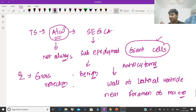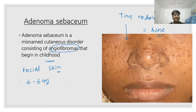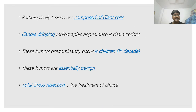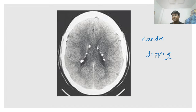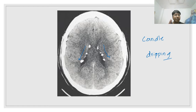The imaging finding for SEGCA is called 'candle dripping appearance' — you can see the appearance of a candle dripping down. The most common site of SEGCA is the wall of the lateral ventricle near the foramen of Monro. This concludes the discussion of tuberous sclerosis and Von Hippel-Lindau syndrome.